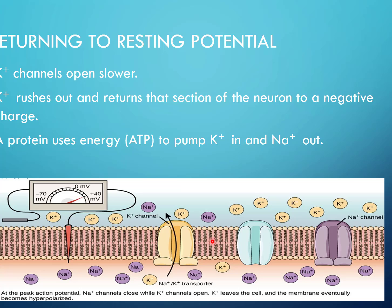Returning the resting potential: after the sodium gates open, potassium channels open — a little bit slower than the sodium gates. Potassium, which is a positive ion, then rushes out, returning the inside of the cell back to a negative charge. A protein that uses ATP — called the sodium-potassium pump or sodium-potassium transporter — then pumps potassium back inside and sodium back outside, restoring the original ion concentrations.